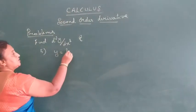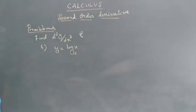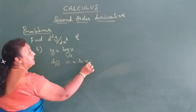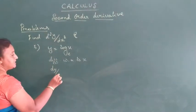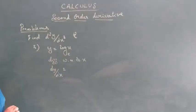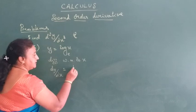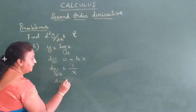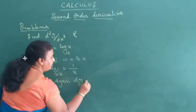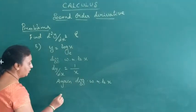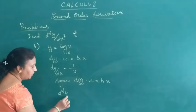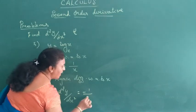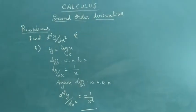Problem 5: y equals log x (base e). Differentiate with respect to x: dy/dx equals 1/x. Again differentiate with respect to x: d²y/dx² equals the derivative of 1/x, which is −1/x².